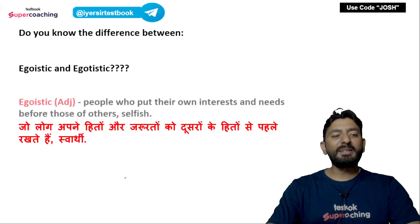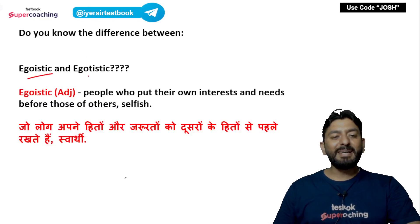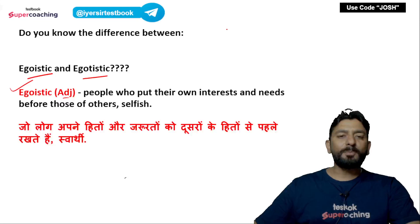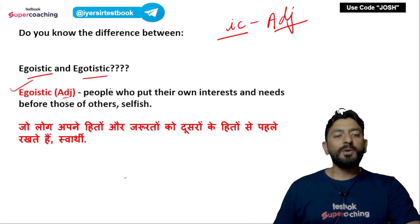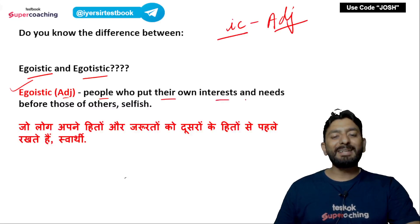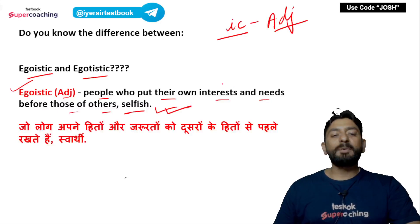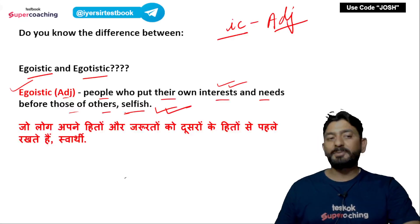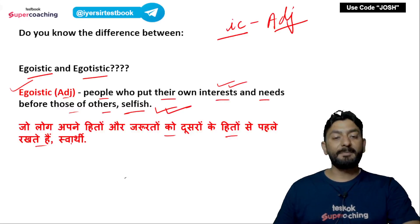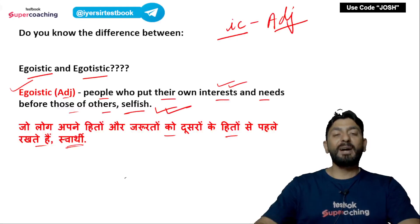Before I start, I had asked about the difference between 'egoistic' and 'egotistic'. Egoistic is an adjective meaning people who put their own interests and needs before those of others — selfish (स्वार्थी). Those who think only about their own interests are called egoistic. In Hindi, लोग जो अपने हितों और जरूरतों को दूसरों के हितों से पहले रखते हैं, उन्हें egoistic कहते हैं — meaning स्वार्थी.